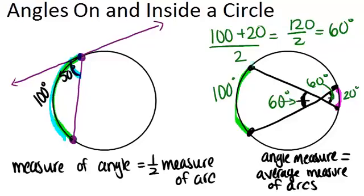if you knew, for example, one of the arcs and the angle that is formed by the chords, you could figure out the other arc by just working backwards with the average to figure out what it would have to be.